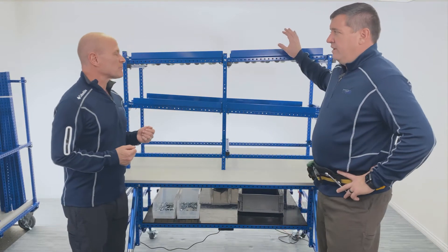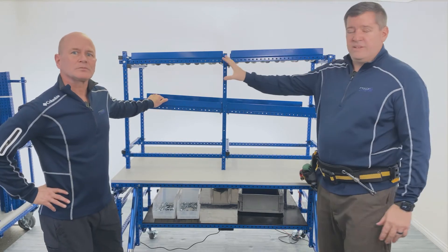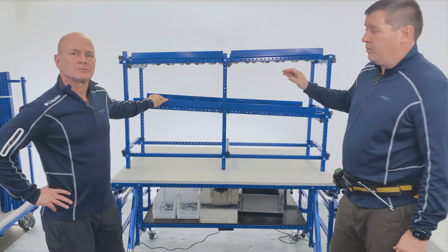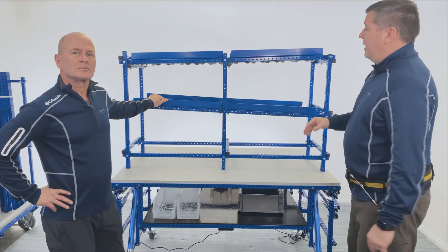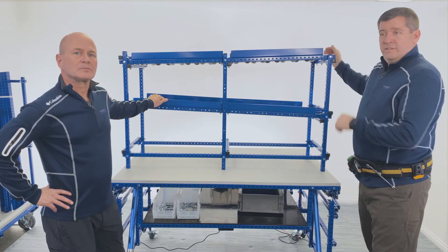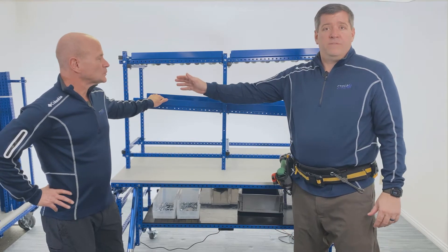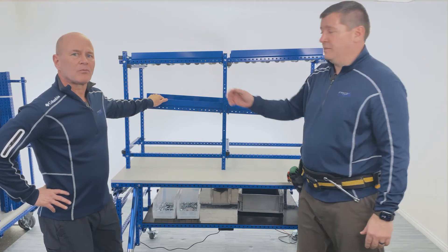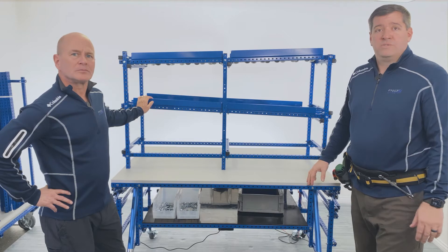So today we're starting off with what we consider to be our standard flow rack design and this same design can apply to whatever size flow rack that you need regardless of upright height, number of flow levels, your bandwidth that you need to supply into, even the length that you need for fitting into your cells with the number of bins you need or the length you need to go from the aisle to the pick point of use. This same design is going to apply regardless of all those factors.